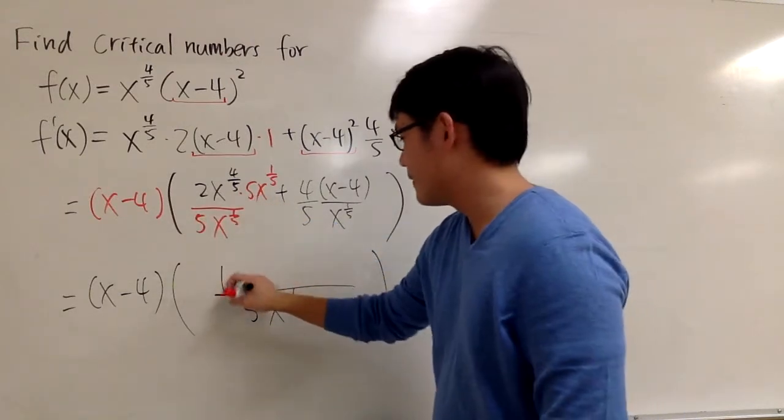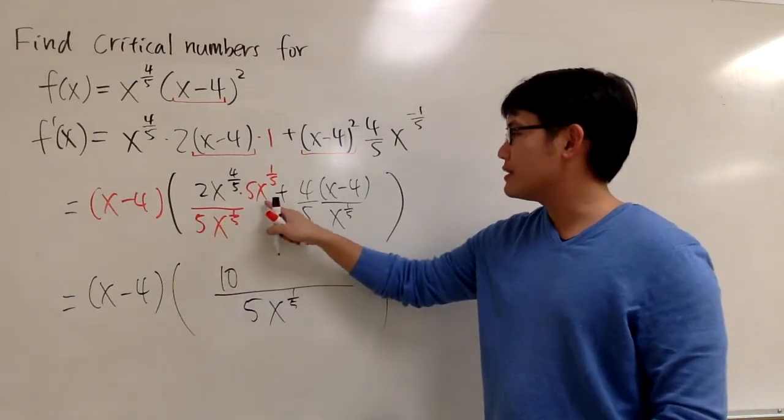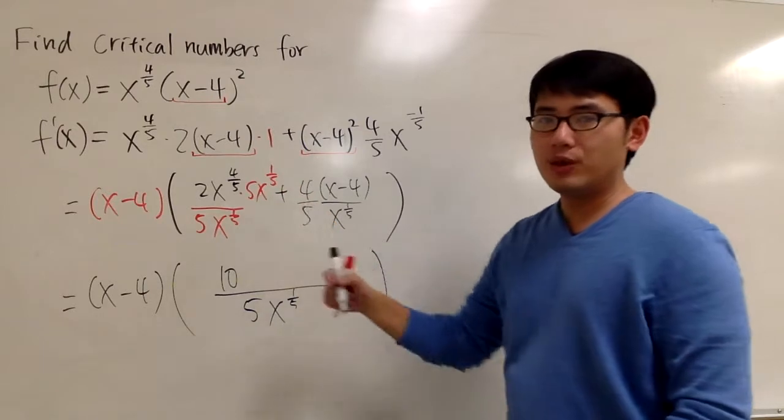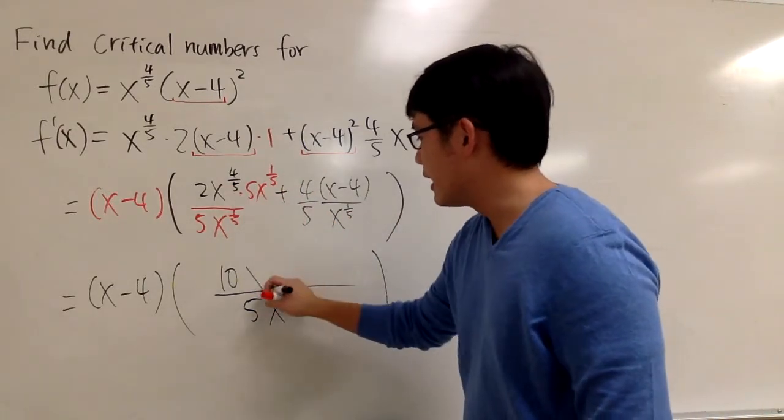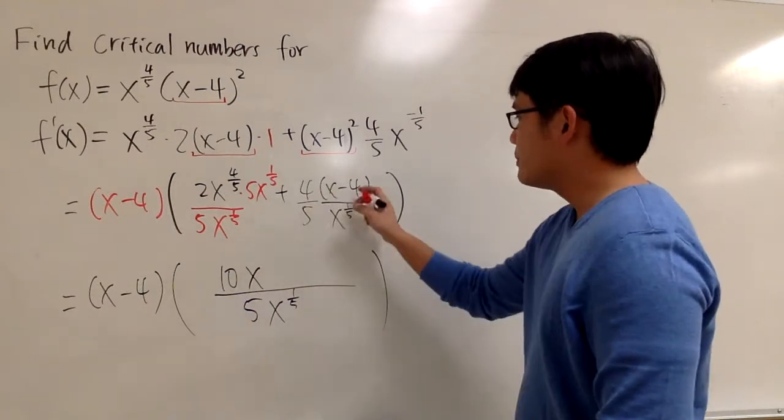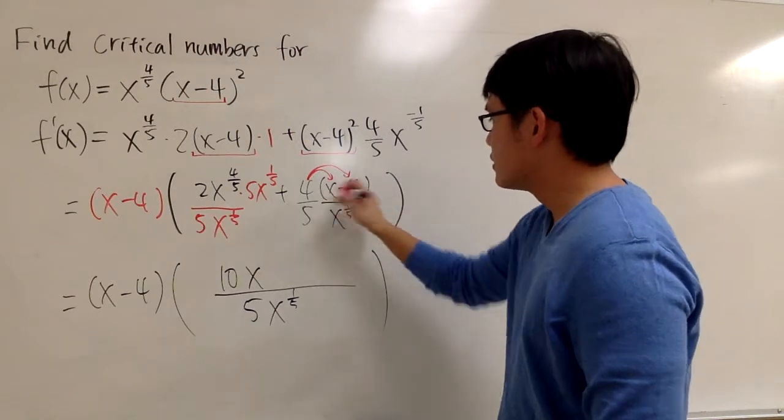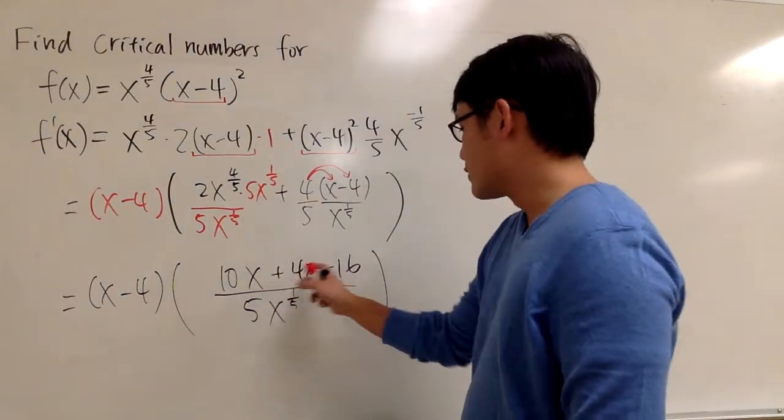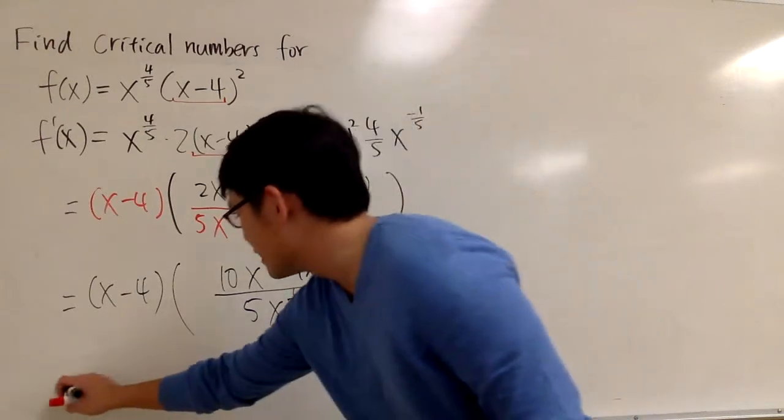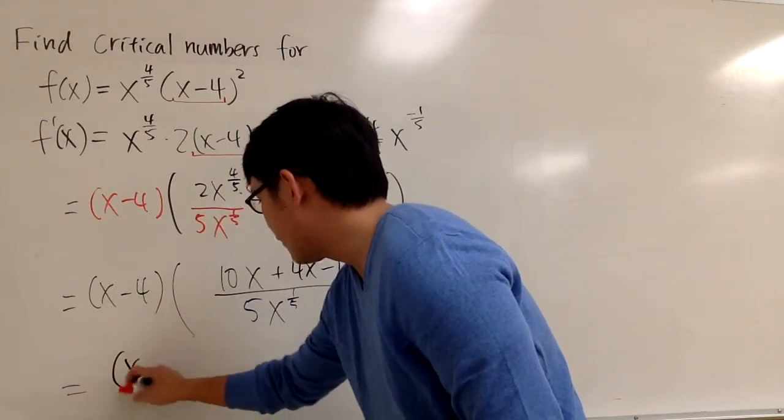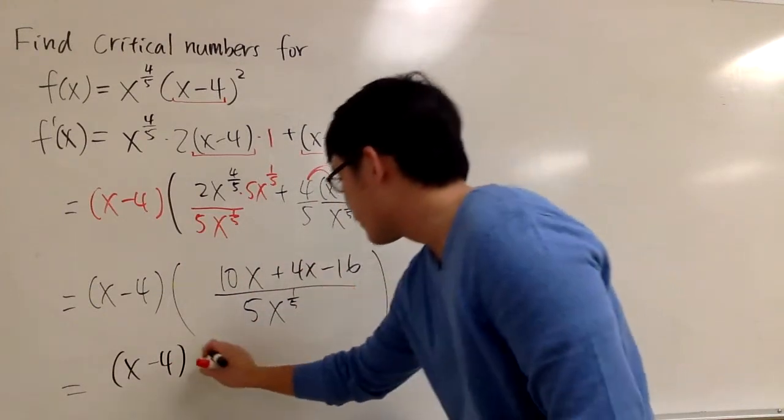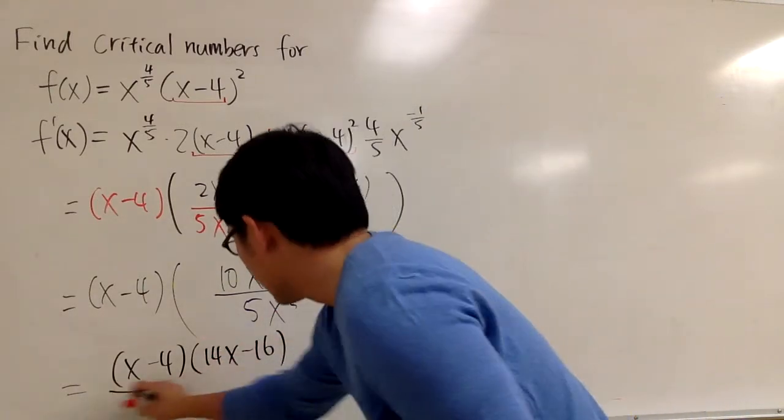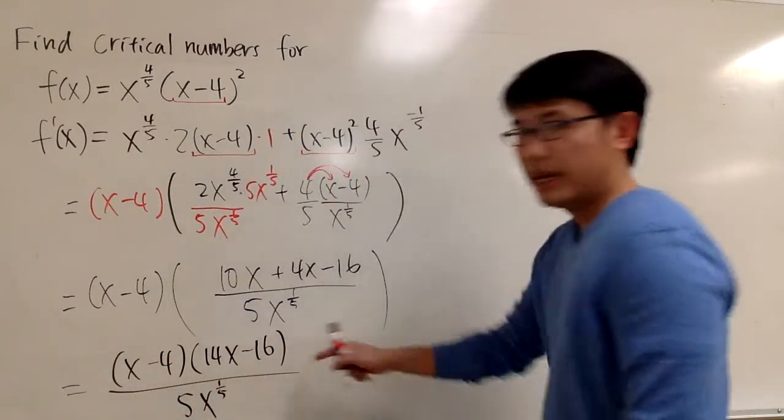This part, we have 2 times 5, which is 10. And this is x to the 4/5 times x to the 1/5. We add the exponents. 4/5 plus 1/5 is 5 over 5, namely we have 1 for the exponent for the x. Altogether, this is x to the first power. And for this part, of course, we can distribute the 4 into the parentheses. So we are talking about 4x minus 16. And of course, finally, this is 10x plus 4x, that's 14x. And altogether, on the numerator, I have (x minus 4). And then the numerator for this part, we have 14x minus 16. And this is the denominator for that: 5x to the 1 over 5. And that is the derivative.